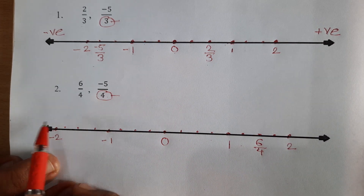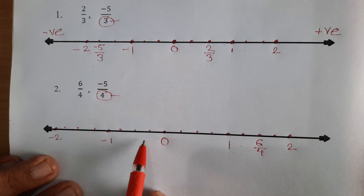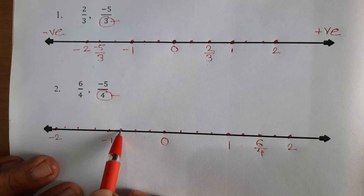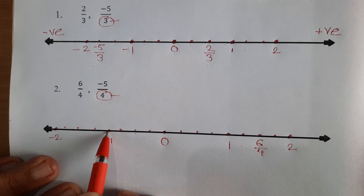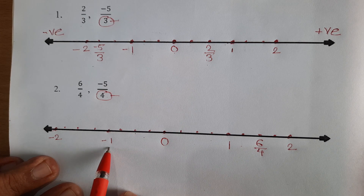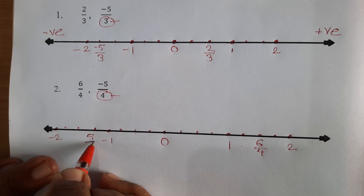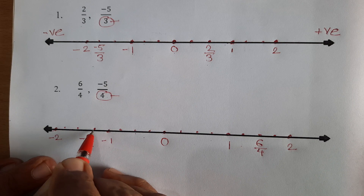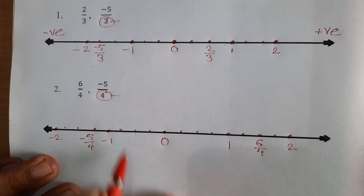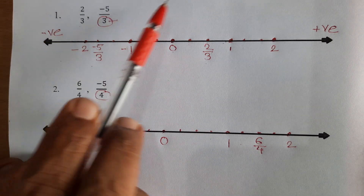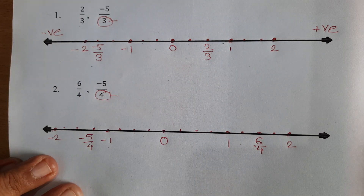Now, negative 5 upon 4 on the left hand side: negative 1 upon 4, negative 2 upon 4, negative 3 upon 4, negative 4 upon 4 — negative 4 upon 4 means negative 1 — and negative 5 upon 4. In this way, we show the rational numbers on a number line. Thank you.